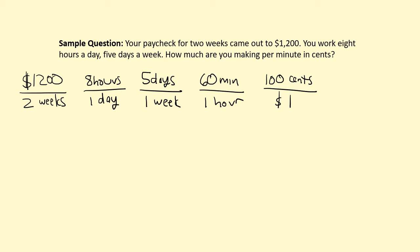The question is, where do we start? To answer that, we have to ask ourselves where we want to end up. We want to end up with some number of cents per minute, so our final unit needs to have cents on top and minutes on the bottom. I can look through my five rates and choose the one that already has cents on top — that is the last rate I wrote: 100 cents per one dollar. I'll write that on the left, and it lines up just right out of the box.